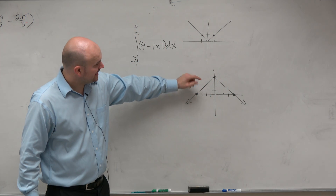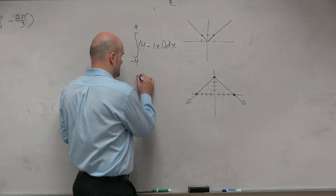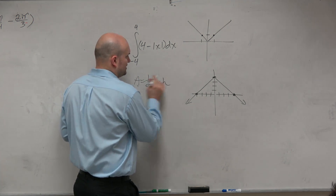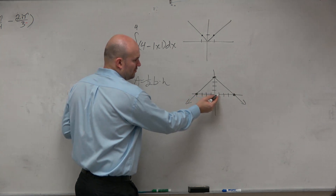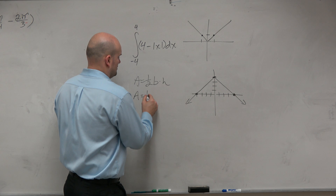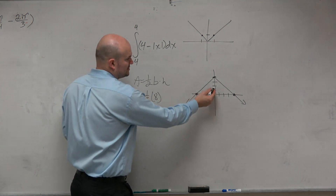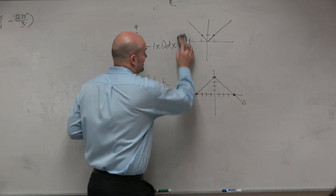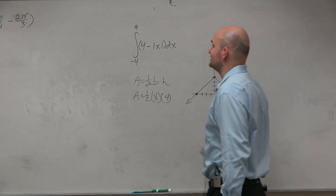In this case, all we simply need to do is figure out the area of a triangle: one half base times height. My base here is 8, and the height is 4. So that's one half times 8 times 4, and that final answer gives me 16.